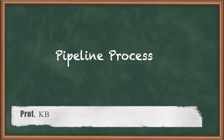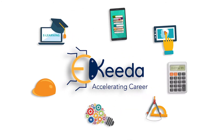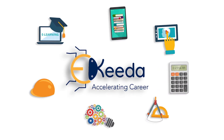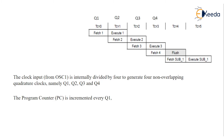Pipeline process is nothing but fetching and execution with non-overlapping in a microprocessor. Earlier, the non-pipelining process worked like: fetching of one instruction, then execution of that same instruction, after which the fetch of the second instruction occurs, then execution of the second instruction — and so on.